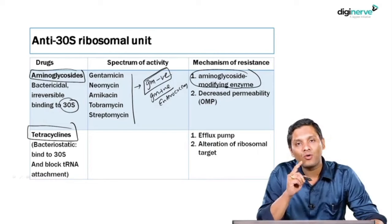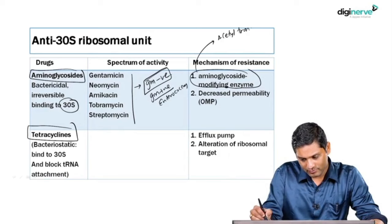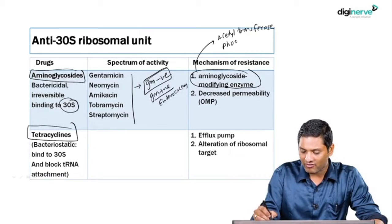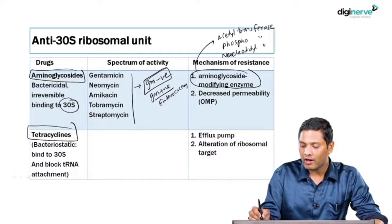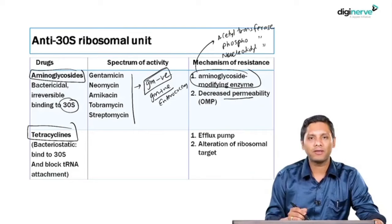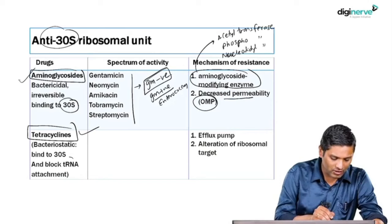The mechanism of resistance shown by aminoglycosides involves producing aminoglycoside-modifying enzymes: acetyltransferase, phosphotransferase, and nucleotidyltransferase. These enzymes destroy the aminoglycoside molecules. Another mechanism of resistance is by decreasing permeability due to mutations in the outer membrane protein of the cell.